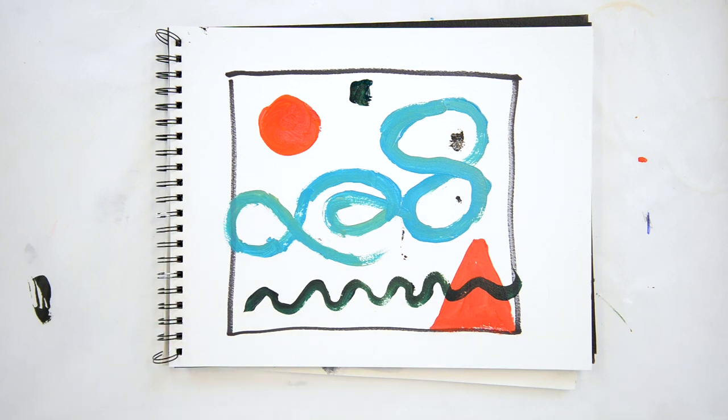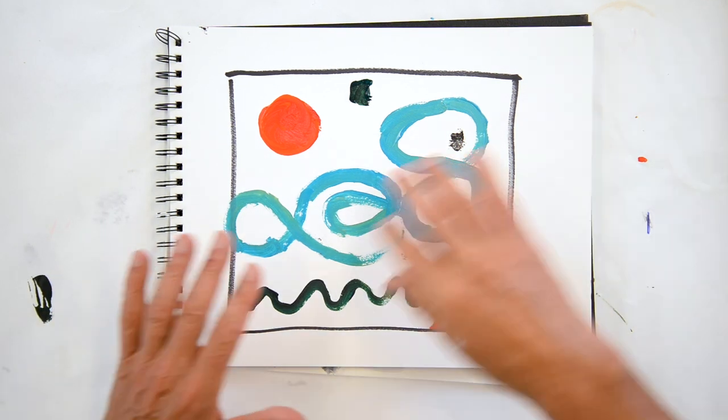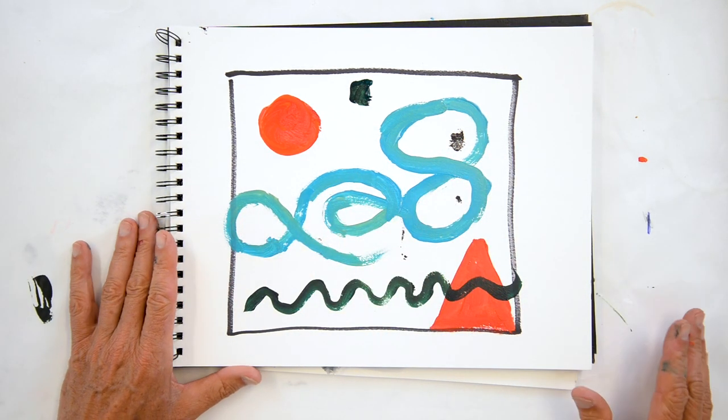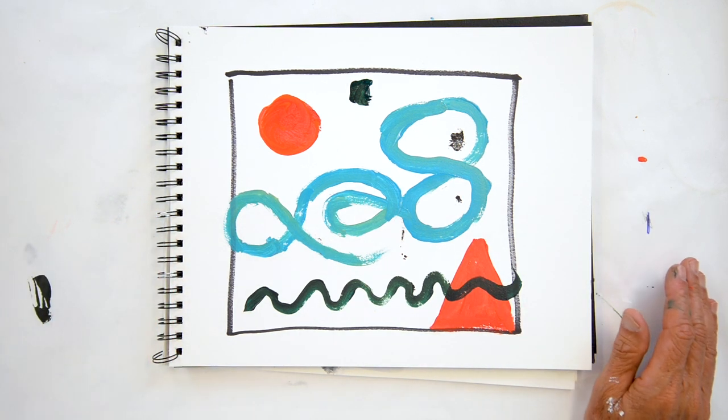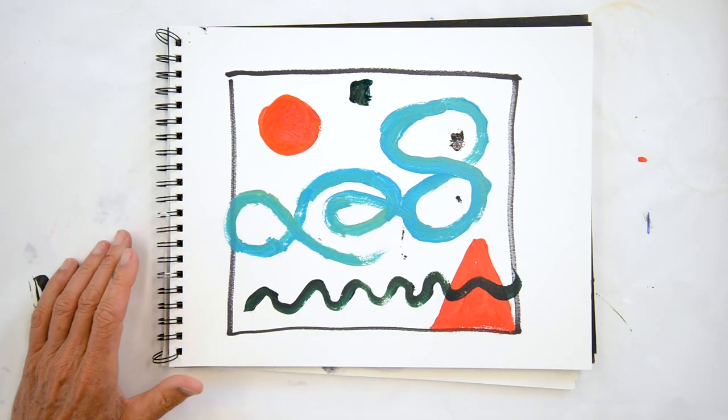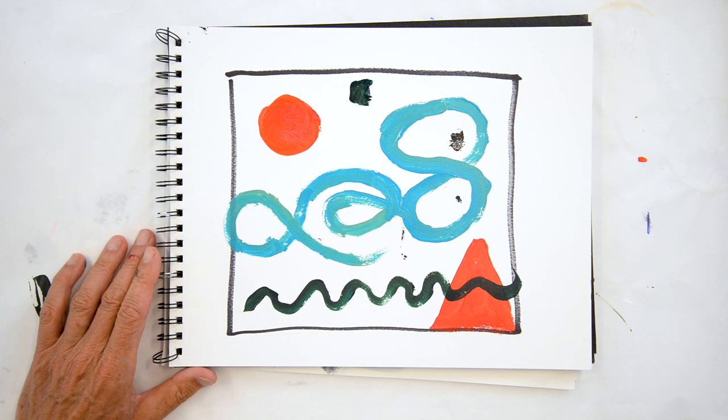This can be something that can really change the quality of what you're looking at. It gets really exciting quite quickly when you're able to start doing that. Now you have to have things in the background or things on one layer, of course, and that's what I just did.